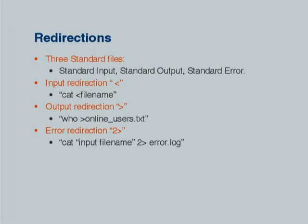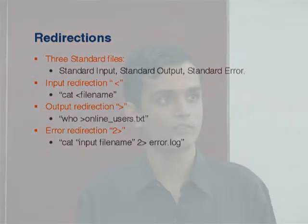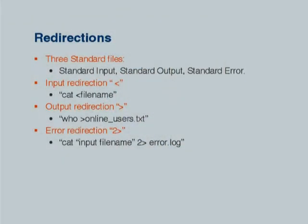In Linux, everything is represented as a file. Every process has a standard input, standard output, and a standard error file. Suppose you want to capture these three streams into a file — you can redirect the input using these methods.